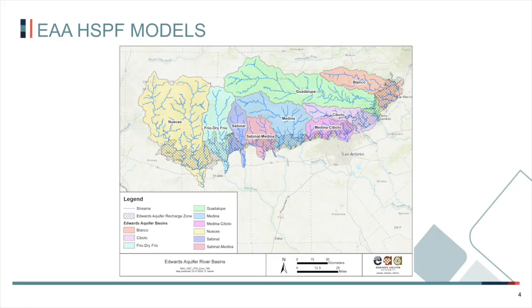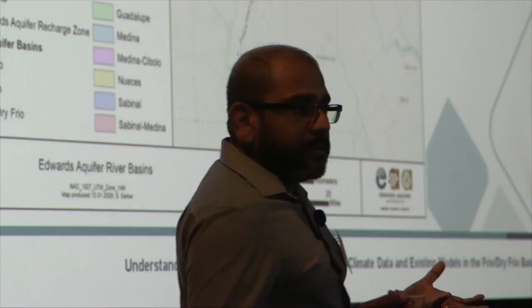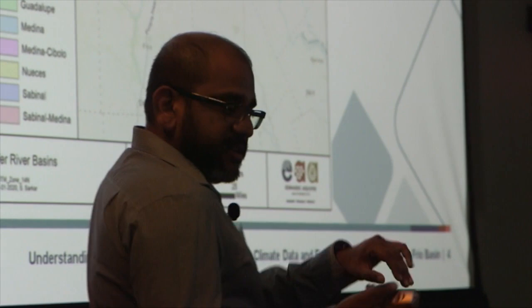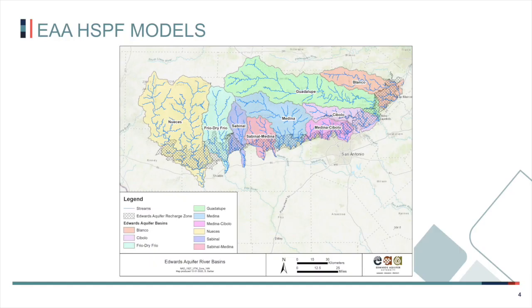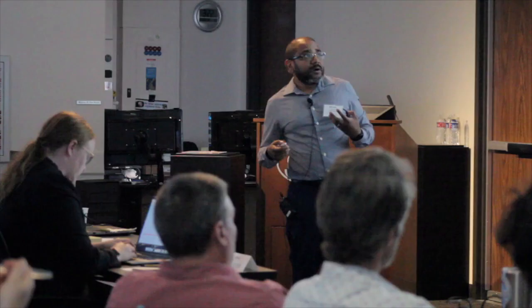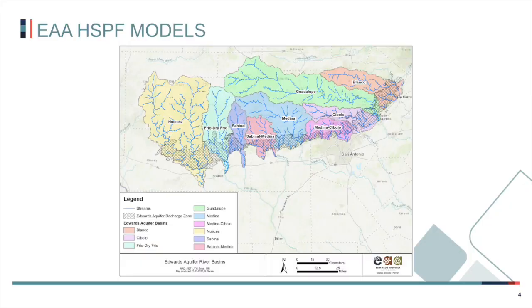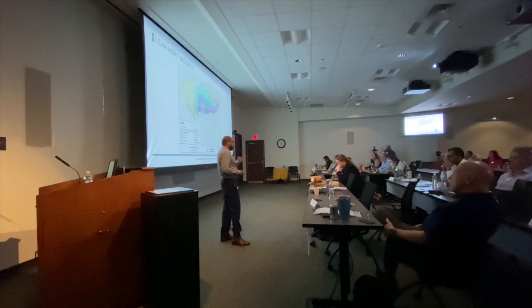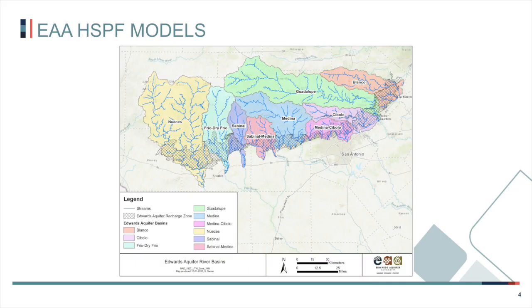One of the things we were looking at was whether there were ways to make these models more efficient. At the time these models were developed, generally for a watershed you'd have one model file, but to account for different components of the hydrologic cycle there were like 11 models for one watershed, each talking to the next in series. To get results for a single run, you had to run them in series and feed results from one into the other. Without sacrificing detail, we looked at combining all of that into one model.